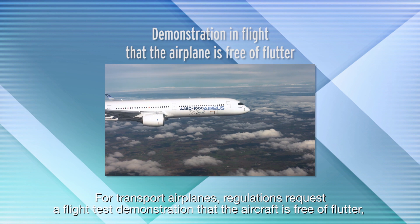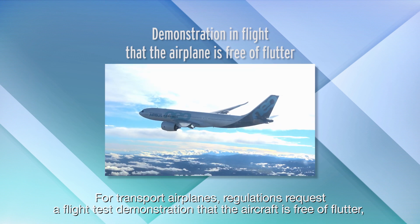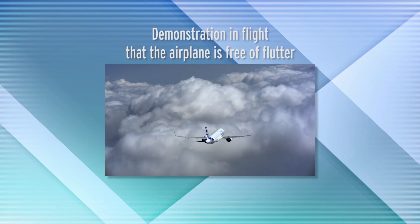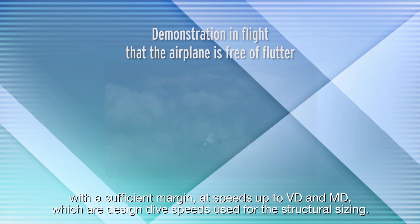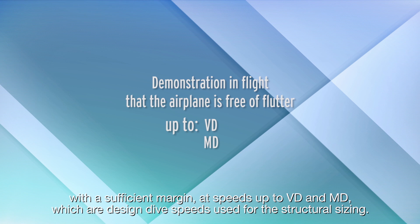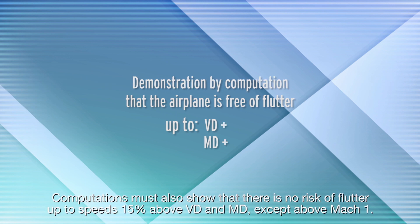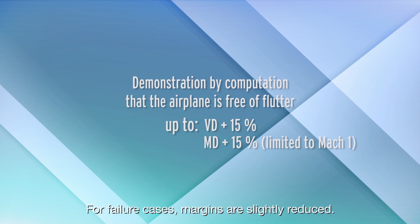For transport airplanes, regulations require a flight test demonstration that the aircraft is free of flutter, with a sufficient margin, at speeds up to VD and MD, which are the design dive speeds used for structural sizing. Computations must also show that there is no risk of flutter up to speeds 15% above VD and MD, except above Mach 1. For failure cases, margins are slightly reduced.